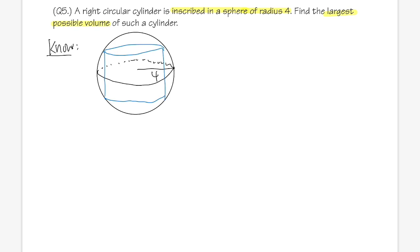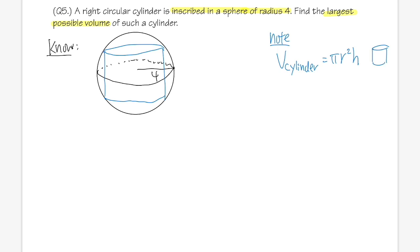I'll remind you: the volume of a circular cylinder is V = πr²h. That's a formula you should definitely remember for optimization and related rates problems.